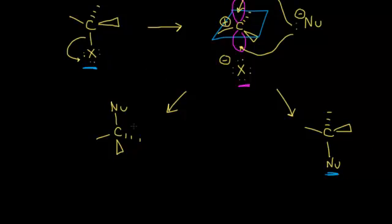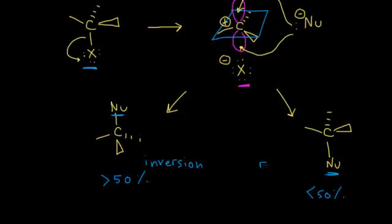For the example on the left, the nucleophile added from above, so that gives you inversion of configuration at your chirality center. You're going to see slightly greater than 50% formation of this inversion product. And then you're going to get slightly less than 50% of the retention of the absolute configuration.